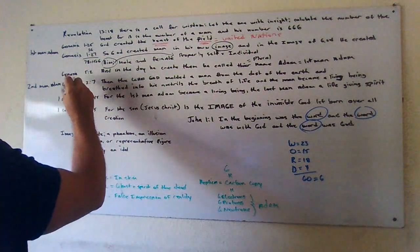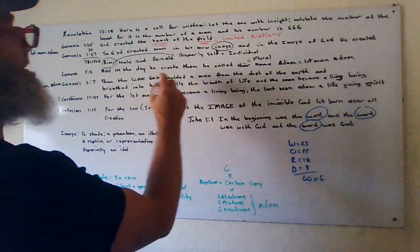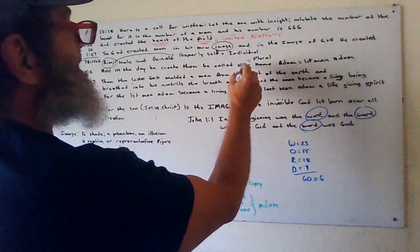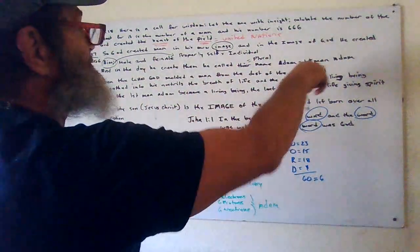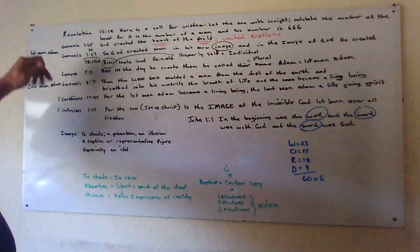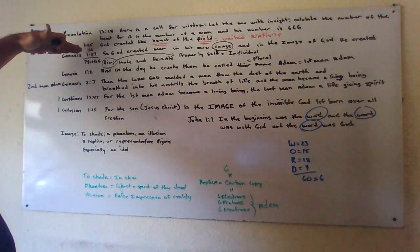Genesis 5:2 says, And in the day they were created, he created, he called their name, plural, Adam. This is the first man, Adam, that's created in Genesis 1:26 and 27.